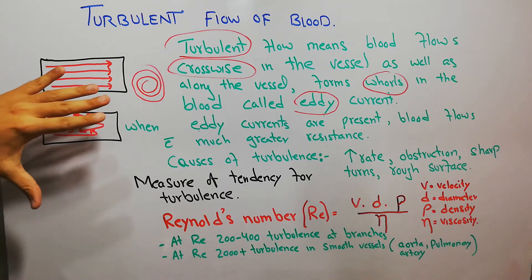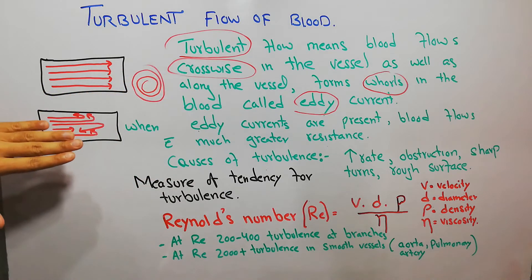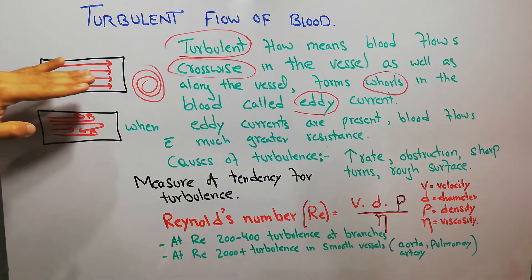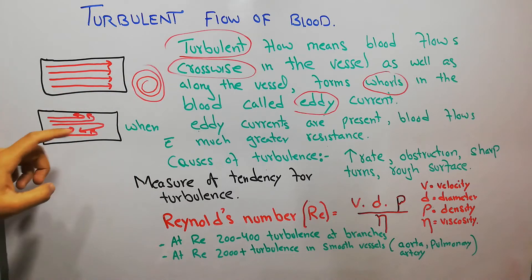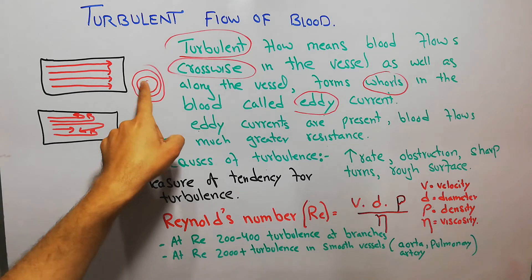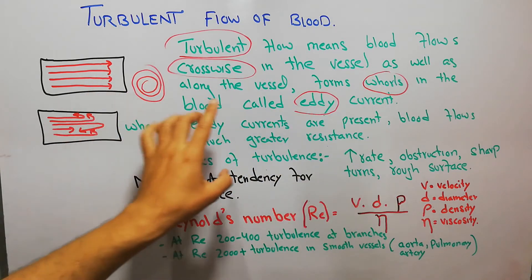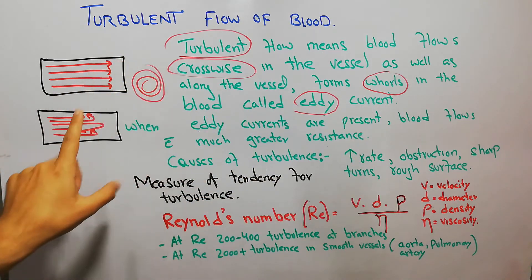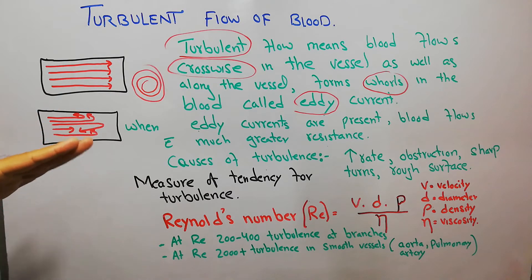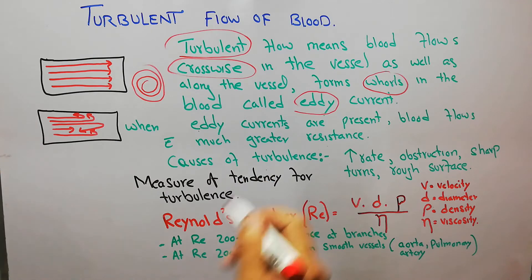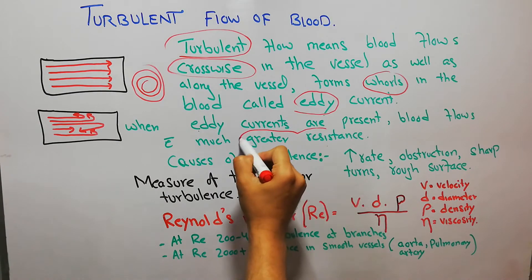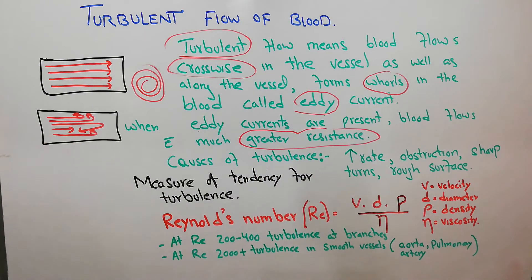In turbulent flow, blood is flowing not only along the vessel but also moving crosswise, which leads to the formation of whorls known as eddy currents. When these eddy currents are formed in the blood vessel, it leads to greater resistance — much more resistance than in the streamline or laminar flow of blood.